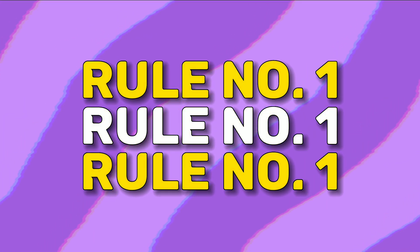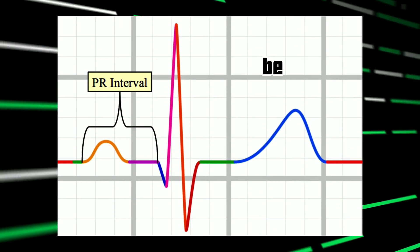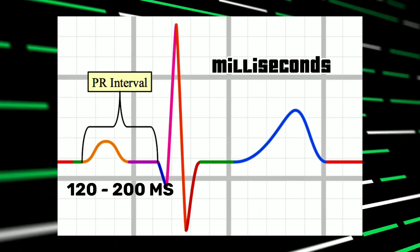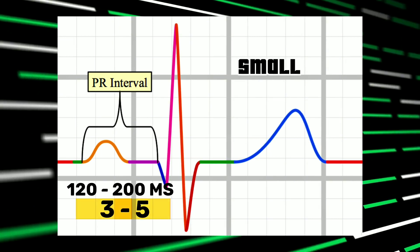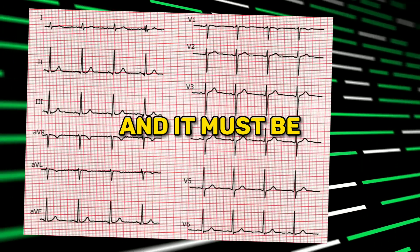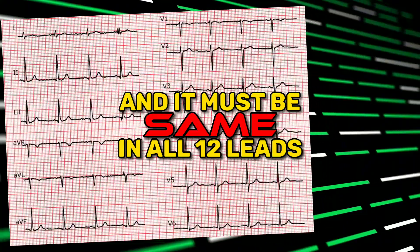Let's crack it. Rule number 1: the PR interval should be 120 to 200 milliseconds, or 3 to 5 small squares, and it must be the same in all 12 leads.